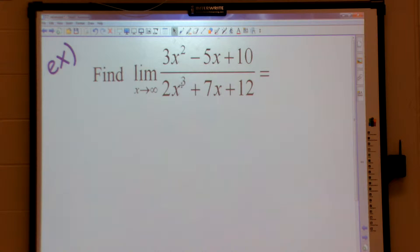The degree of the denominator, 3, is bigger than the degree of the top. So what I'm going to do, I'm going to divide everything by that highest x value. I'm going to divide everything by x cubed. Do not drop your limit.